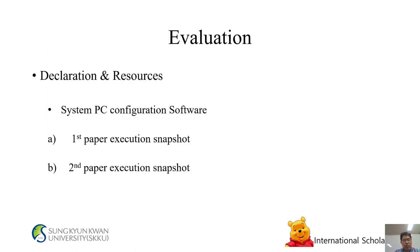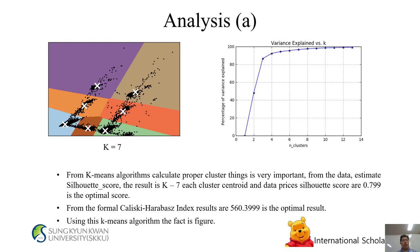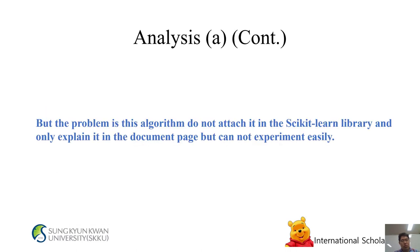Analysis A: This is the K=7 result for the optimal result for the experiment. From the K-means algorithm, calculating proper clusters is very important. From the data estimate, using the Silhouette Score, the result is K=7. Each cluster centroid and data points yield a Silhouette Score of 0.799 as the optimal score. From the Calinski-Harabasz Index, the result is 560.3999 as the optimal result.